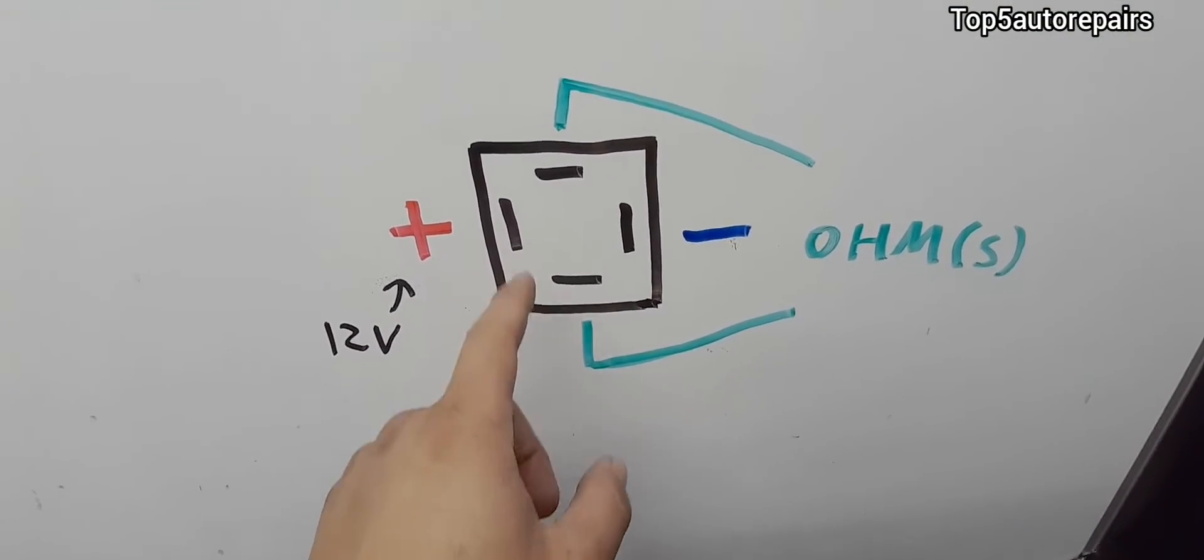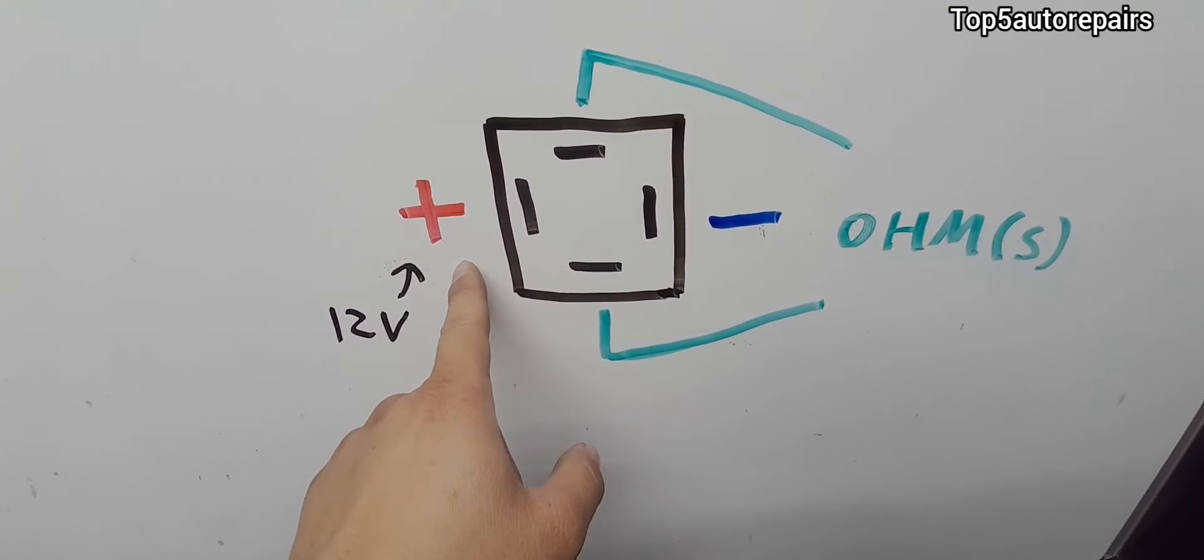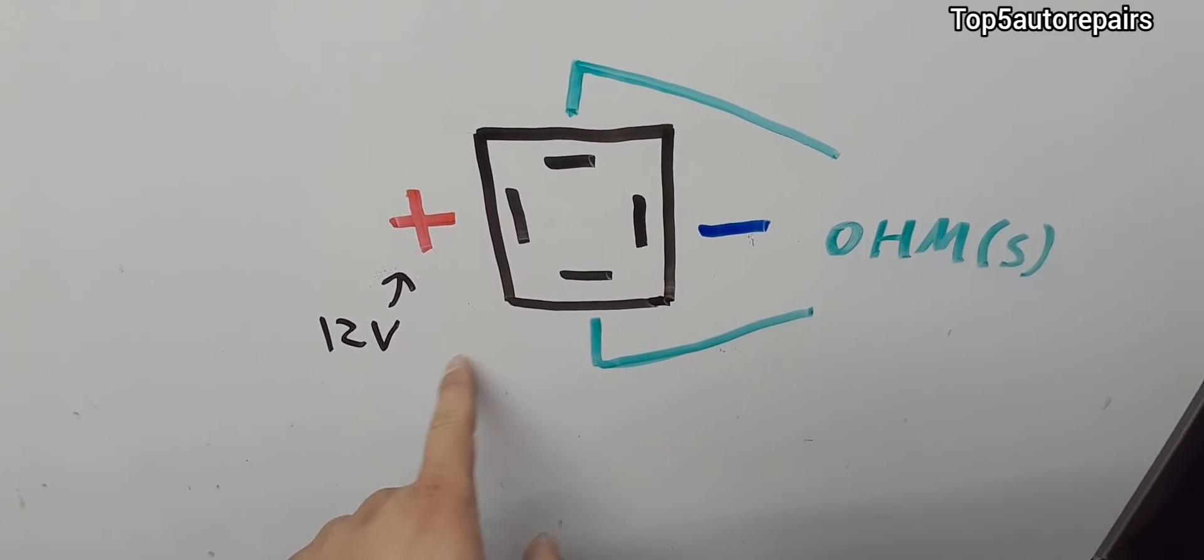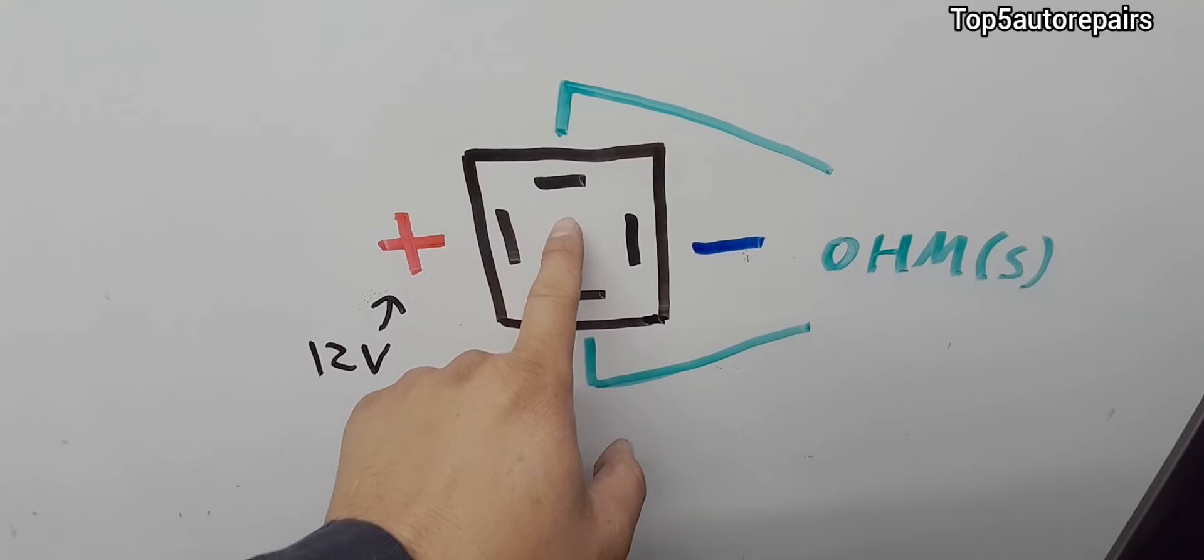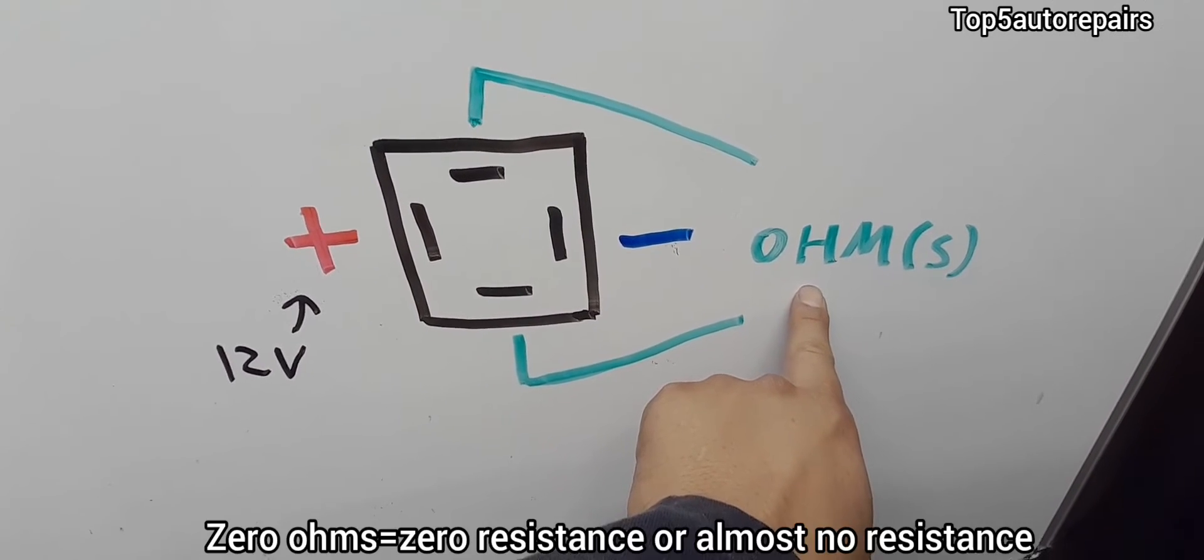Now this part here and here is where you're going to give 12 volts. When that happens, it's going to energize the coil and the contact over here and here is going to close. And when you check it with your multimeter, you should get some sort of reading in ohms.